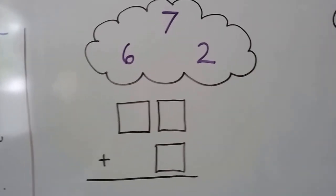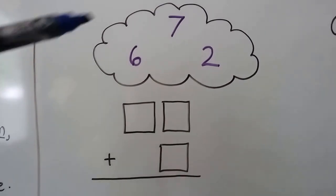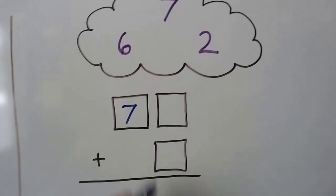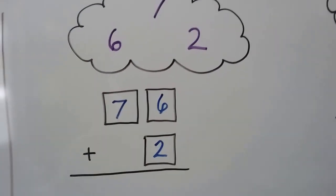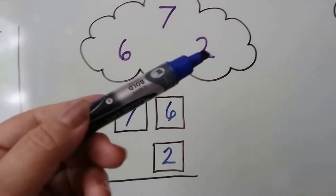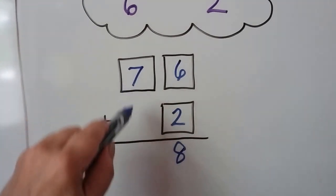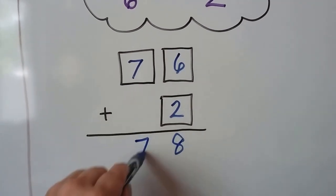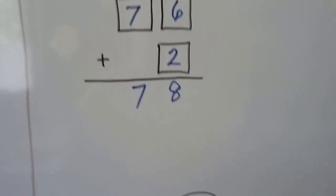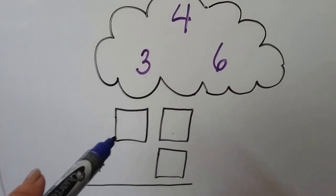Let's try this one. We have a seven, a six, and a two. We need to put them into the three boxes to make the greatest sum. If we choose the seven to put in the tens place, then we'll have seven tens. Then we can put the six and the two in the ones place, and we'll have the greatest sum because seven tens is more than six tens or two tens. Six, seven, eight — we drop the seven down because there's nothing to add to it, so it's just 78, and that's the greatest sum.